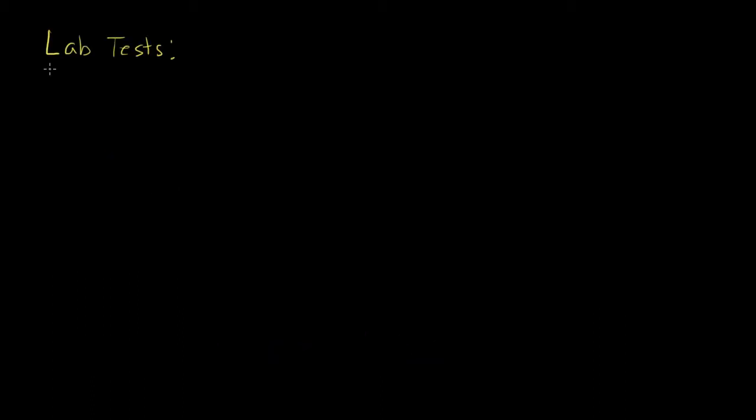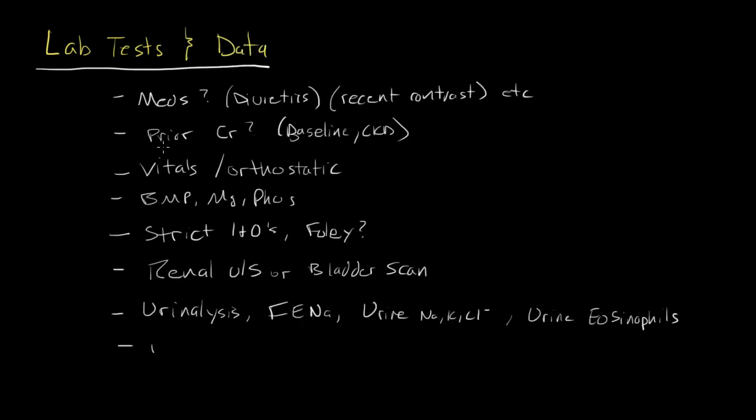Now, acute kidney injury is one of those disorders where more than just your history and physical exam, which are relevant, having the appropriate lab tests to really evaluate your renal function is critical to helping you distinguish what type of renal injury is going on and how you need to treat it. It's not just lab tests, but data in general which you need to look at. The first thing we need to be aware of is, is the patient on any medications that could affect their renal function? Are they on diuretics? Have they had a recent contrast exposure, et cetera? Because this can really help determine if your renal failure maybe is from dehydration because they've been on too many diuretics, or if that may be impairing your ability to know if something else is going on.